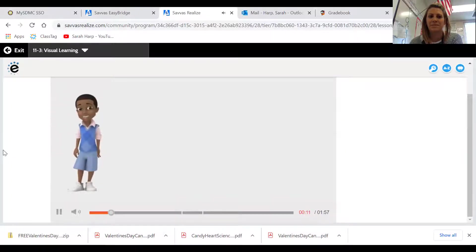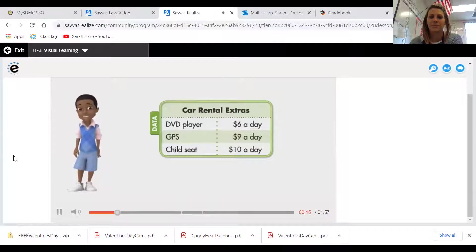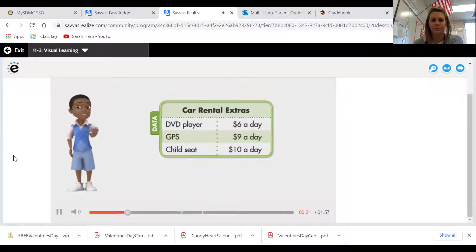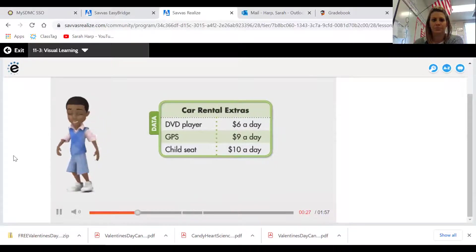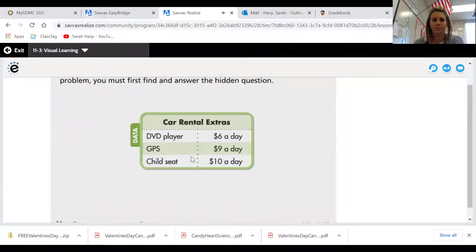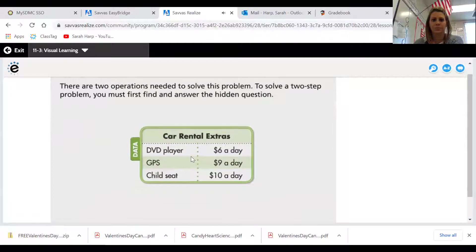How can you solve two-step problems? Jill can rent a car and GPS device for $325 for seven days. What is the cost to rent the car for a week without the GPS device? There are two operations needed to solve this problem. To solve a two-step problem, you must first find and answer the hidden question.